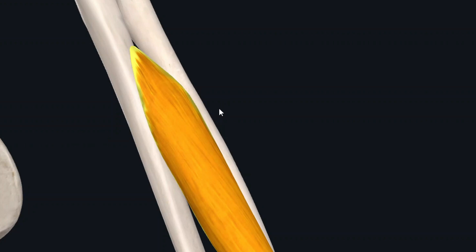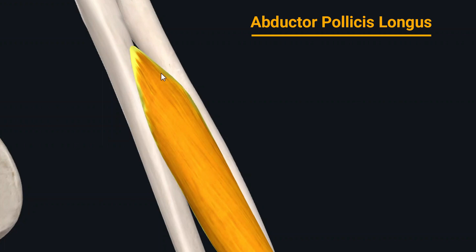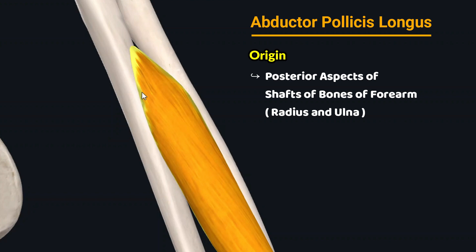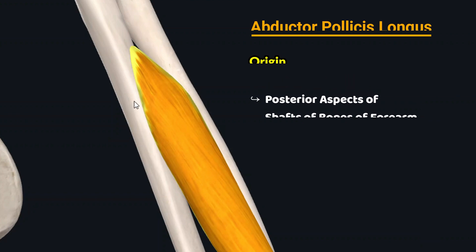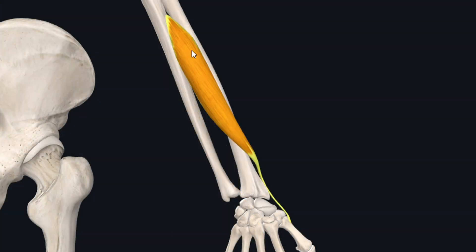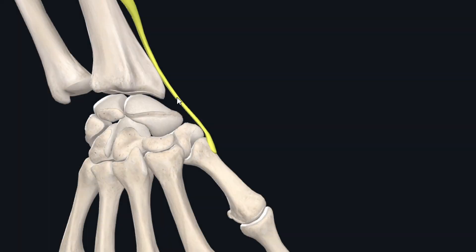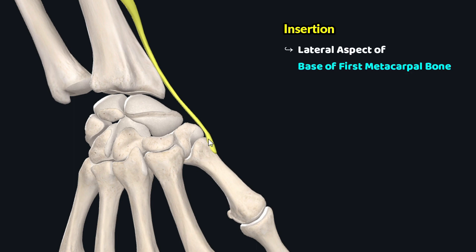The second muscle is the abductor pollicis longus, which is a long slender muscle. This muscle originates from the posterior aspects of the shafts of the bones of the forearm, that is the radius and the ulna. The fibers travel down inferolaterally over the dorsal aspect of the forearm, and just superior to the wrist they give rise to a muscle tendon which crosses the wrist joint and inserts onto the lateral aspect of the base of the first metacarpal bone.